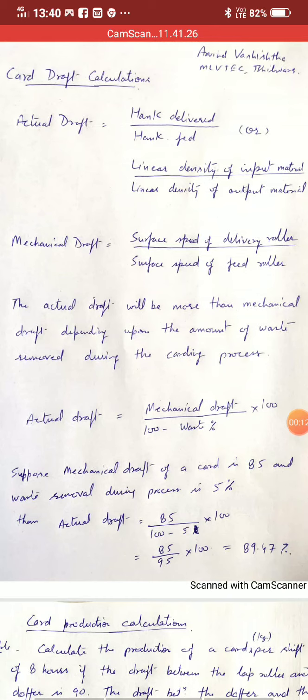You know drafting is the process of attenuating laps, slivers and rovings to decrease the mass per unit length. In the spinning process first we make laps then gradually we reduce the linear density to convert it into sliver, rovings and yarn.